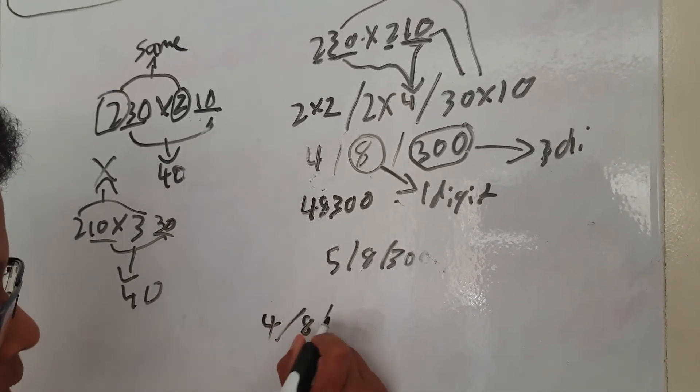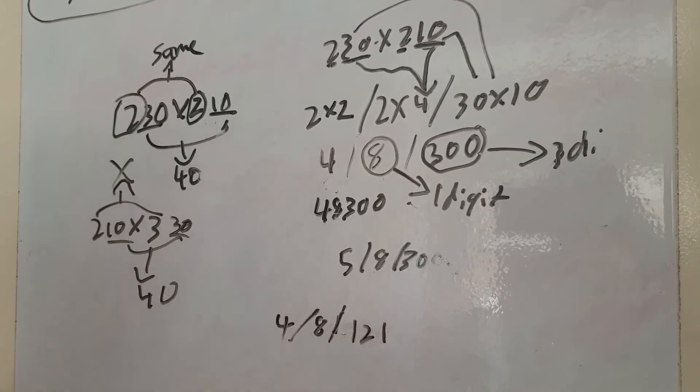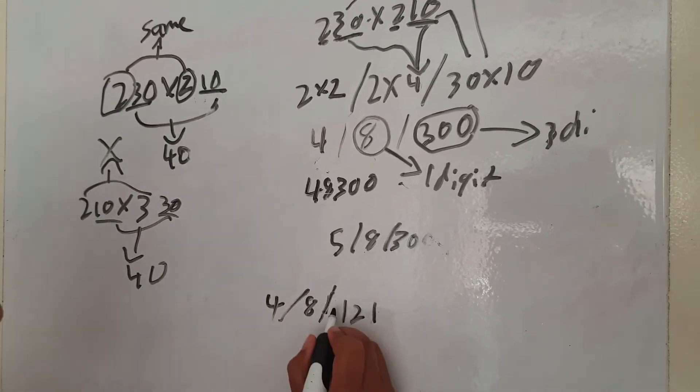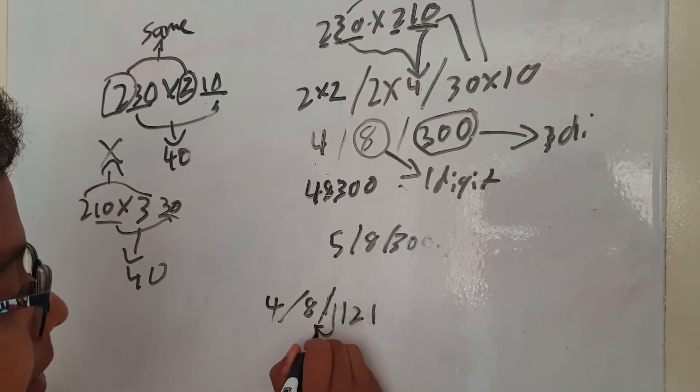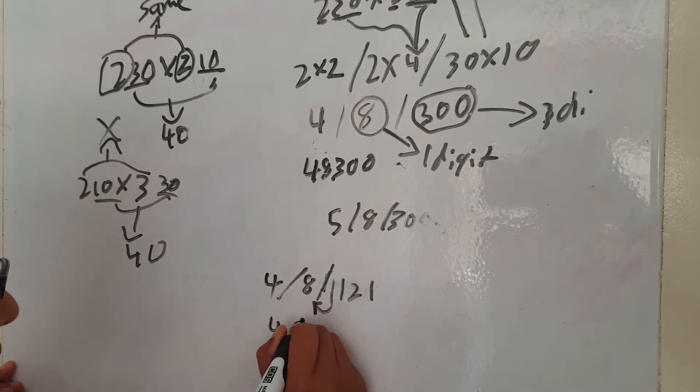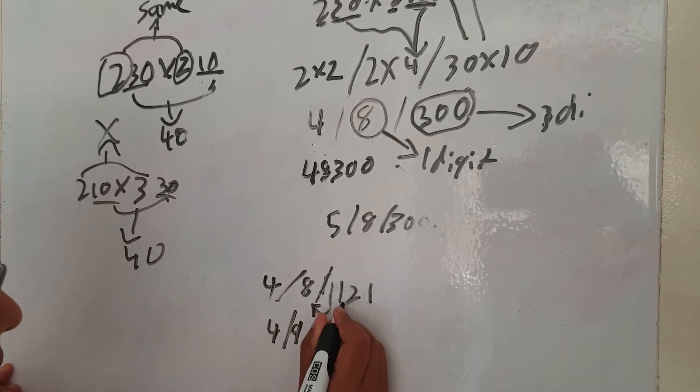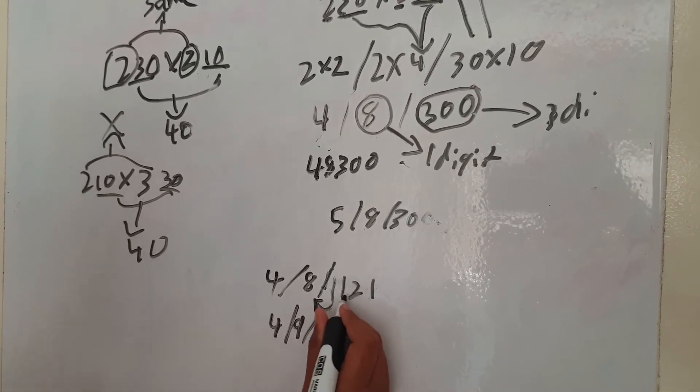But if there's too many digits, for example, if there was 1121, then what you just do is move this one over there, so it'll be 4, and the 1 plus 8 is 9, and then 121.